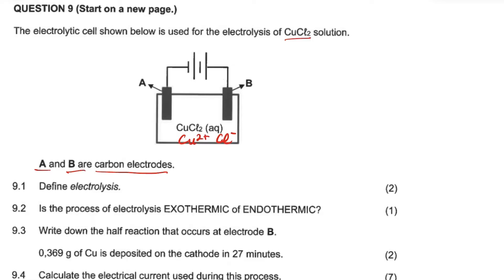Electrode B is connected to the positive side, so it is the anode — oxidation occurs there. Electrode A is connected to the negative side, making it the cathode — reduction occurs there. Since B is the anode, it releases or loses electrons, leaving it positively charged.